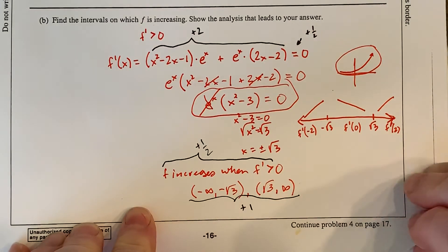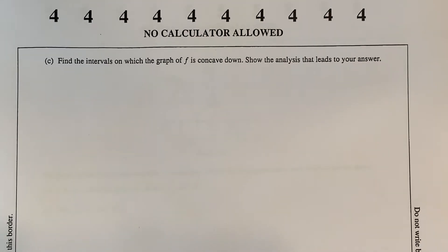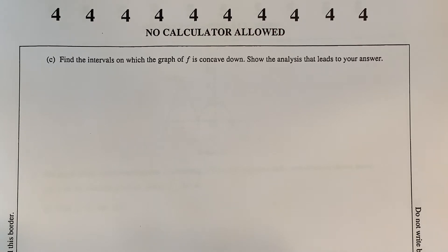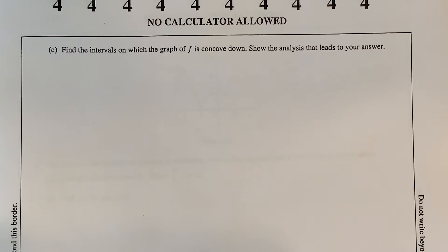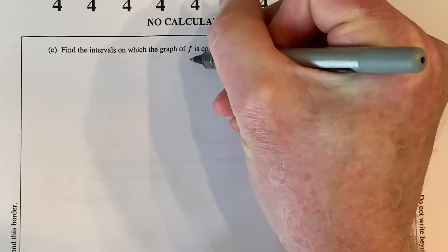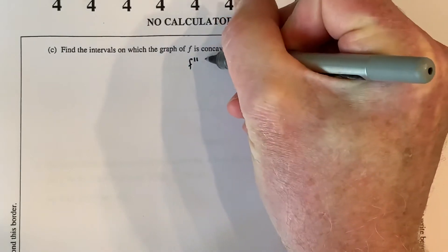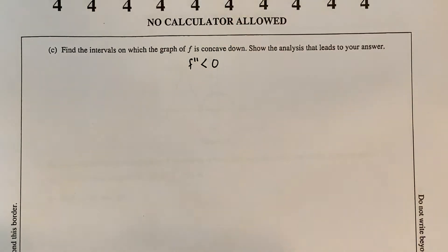Part C says find the intervals on which the graph of F is concave down. A function is concave down when its second derivative is less than zero. To determine that, I need to find where the second derivative equals zero and then check in between. So I need to take the derivative of the first derivative again.